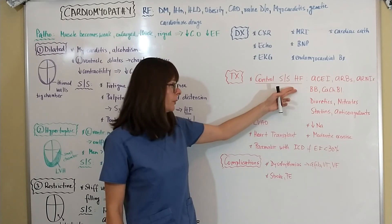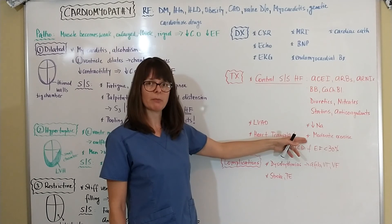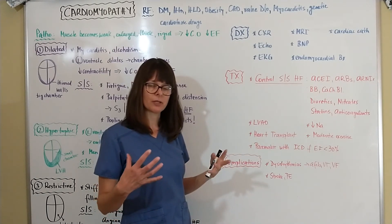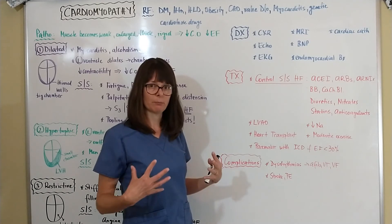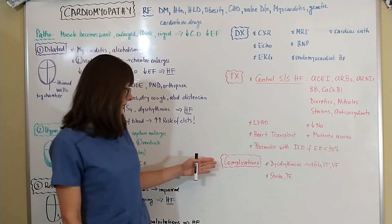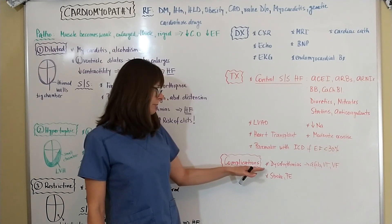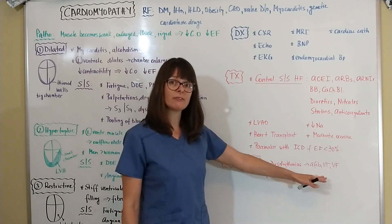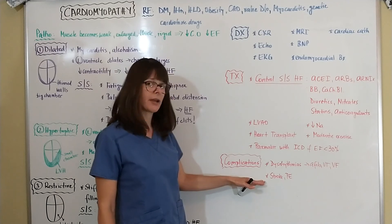Lifestyle modifications include a decreased sodium diet because heart failure patients tend to retain fluid. Moderate exercise is recommended, but patients with cardiomyopathy should avoid strenuous activity, as exertion could push them over the threshold and cause dysrhythmias or pulmonary edema. As for complications, the weaker the heart gets and the lower the ejection fraction, the more likely the patient is to develop dysrhythmias such as atrial fibrillation, ventricular tachycardia, or ventricular fibrillation, and there is high risk for clotting leading to strokes and pulmonary emboli.